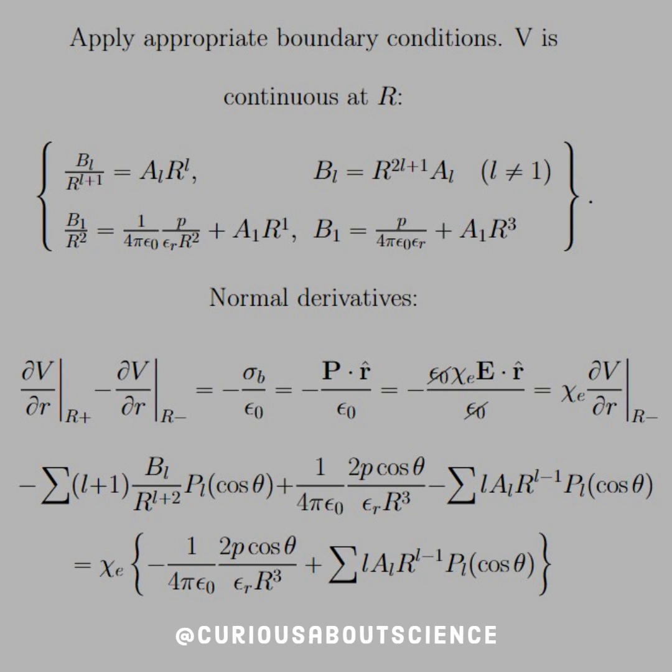And then for the case where L is equal 1, we can go ahead and plug that in. And we see that B1 is equal to P over 4 pi epsilon naught times epsilon R plus A1 R cubed. Again, that's just some simplification.